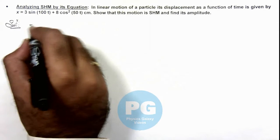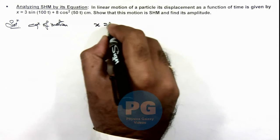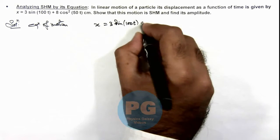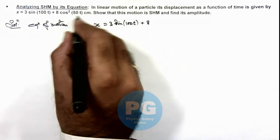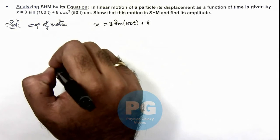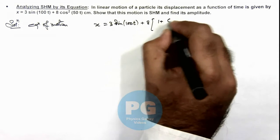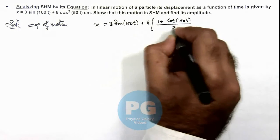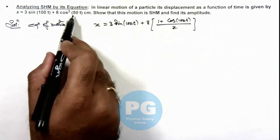So here the equation of motion can be analyzed as: we are given the equation as 3 sine of 100t, plus 8 cos squared 50t. We can open it up in half angle form and double angle form, writing cos squared 50t as 1 plus cos of 100t, divided by 2.